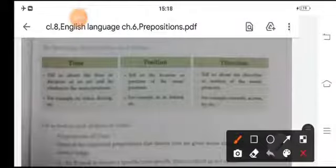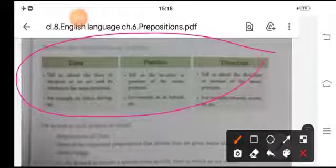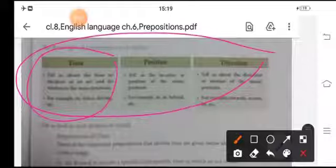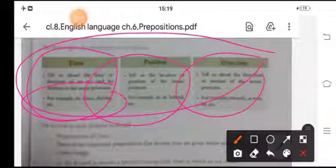Now, there are three types of preposition, like the preposition of time, preposition of position, and preposition of direction. Times tell us about the time or the duration of an act and its relation. For example, to, since, during, etc. Position shows the location or the position of the noun, pronoun, for example, at, in, behind, etc.